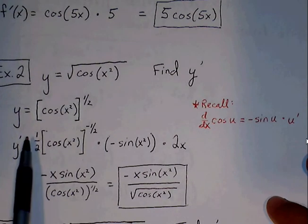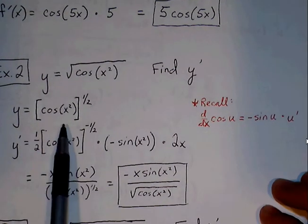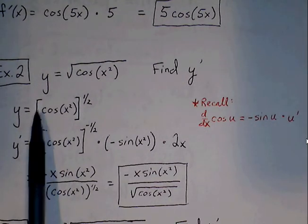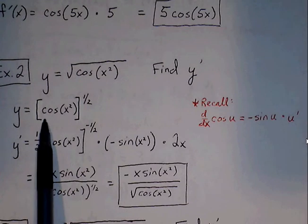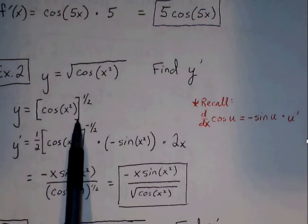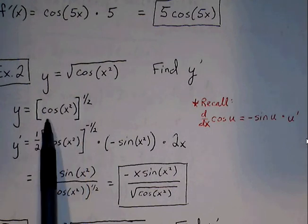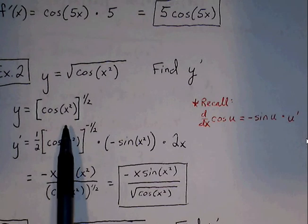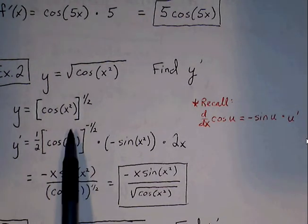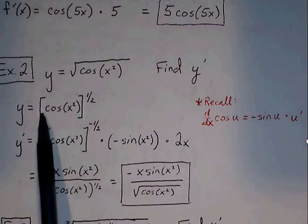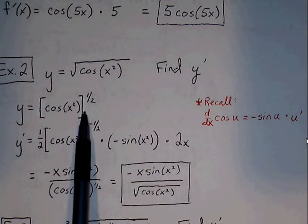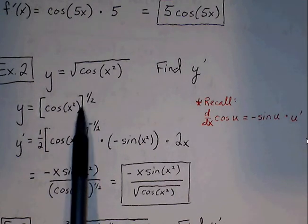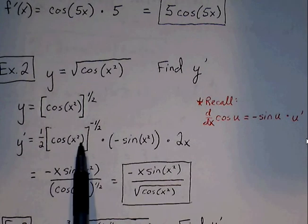Now we have a chain rule that we have to use to find the derivative. With chain rule, we have different layers, and we want to take care of the outermost function's derivative first, and then we can take care of the inner function's derivative. In this case, there are going to be three layers. The first part is outside the bracket to the 1 half. We bring down the 1 half and keep everything inside the bracket.